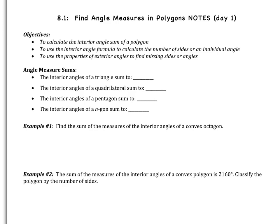Today we have three objectives. We're going to calculate interior angle sums of a polygon. We're also going to use the interior angle formula to calculate the number of sides given a figure or an individual angle in that figure. And then we are also going to use properties of the exterior angles.